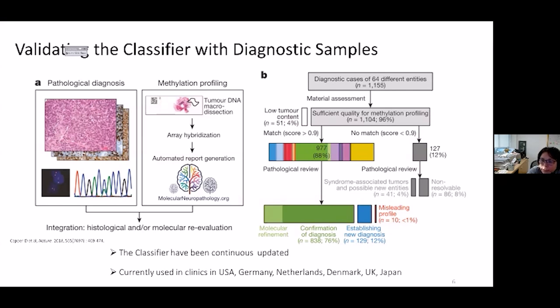The classifier has been continuously modified with more tumor entities being recognized with each update, and such evolution will continue as knowledge on novel classes grows. Currently, the classifier is used in clinics in the US, Germany, Netherlands, Denmark, UK, and Japan.